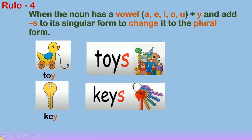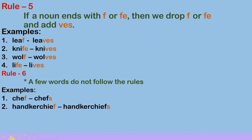Rule number five: if a noun ends with the letter F or FE, we drop the F or FE and add VES. For example, 'leaf' — L-E-A-F — becomes 'leaves' — L-E-A-V-E-S. The word leaf ends with letter F; to make its plural form, we drop the letter F and write VES — leaves.